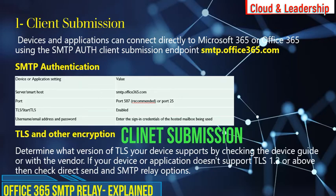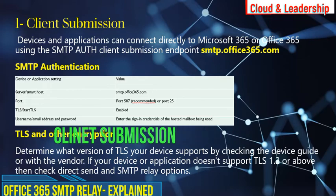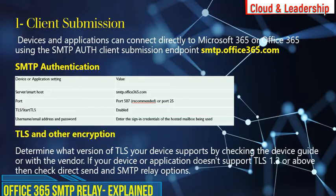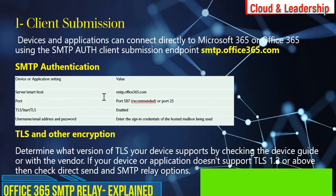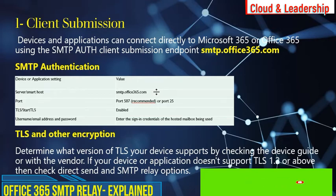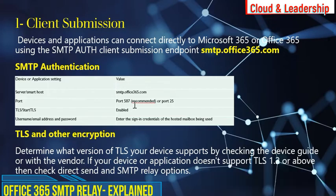Number one — client submission. Devices and applications can connect directly to Microsoft 365 using the SMTP authentication client submission endpoint, which is smtp.office365.com. You can enter smtp.office365.com in your scanner or application as the server. Port would be 587 or 25, TLS is mandatory and must be enabled or supported by your devices or application for authentication.